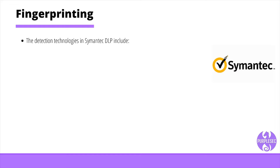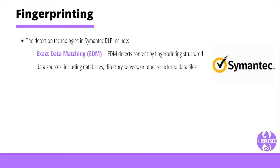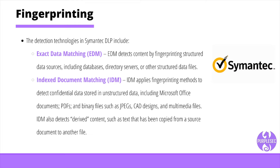Semantic DLP has a combination of advanced technologies that can accurately detect all of the confidential data in your organization, whether it's at rest or in motion. The detection technologies in Semantic DLP include Exact Data Matching, or EDM — EDM detects content by fingerprinting structured data sources, including databases, dictionary servers, and other structured data files — and Index Document Matching, or IDM. IDM applies fingerprinting methods to detect confidential data stored in unstructured data, including Microsoft Office documents, PDFs, and binary files such as JPEGs, CAD designs, and multimedia files. IDM also detects derived context, such as text that has been copied from a source document to another file.